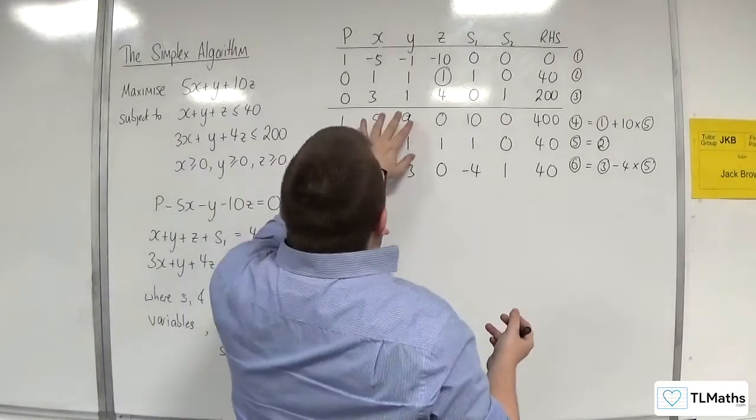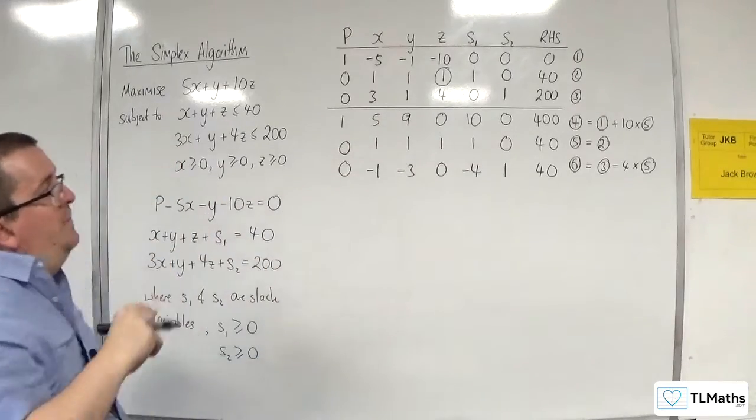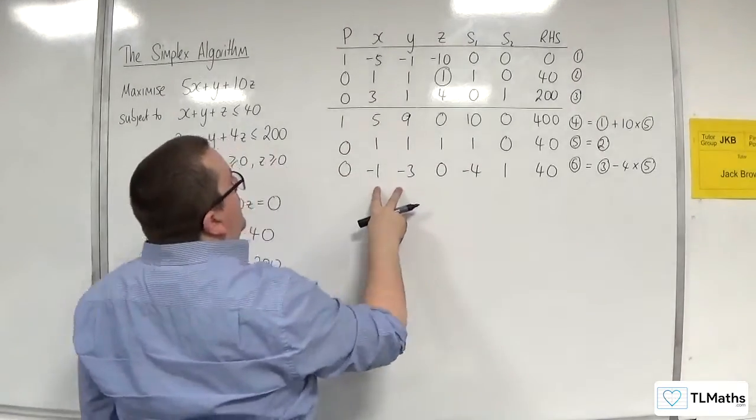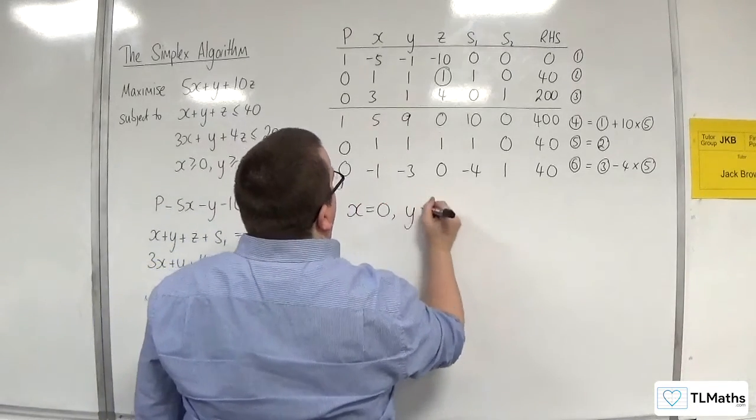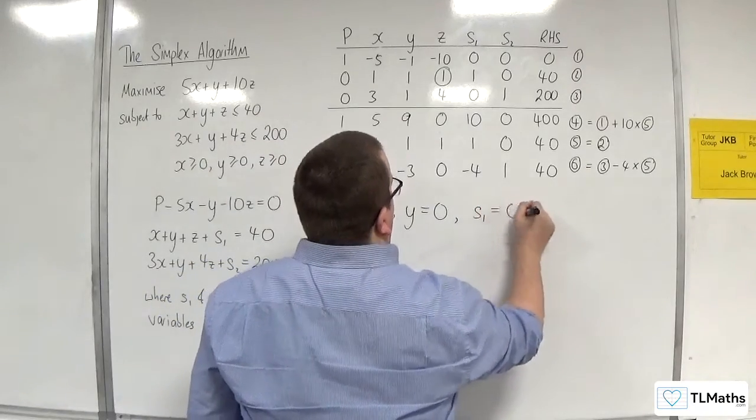So x and y, because they don't have just a 1 and the rest are 0s, x and y are non-basic. So x and y are both 0. So x is 0, y is 0. We also have S1 as being 0. That's non-basic.